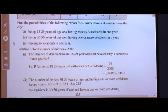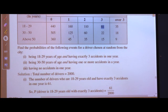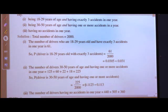The next event: being 30 to 50 years of age and having 1 or more accidents in a year. One or more accidents means 1 accident, 2 accidents, 3 accidents, or over 3 accidents. That is 125 plus 60 plus 22 plus 18, which equals 225. So the probability equals 225 upon 2000, which is 0.1125, equivalent to 0.113.